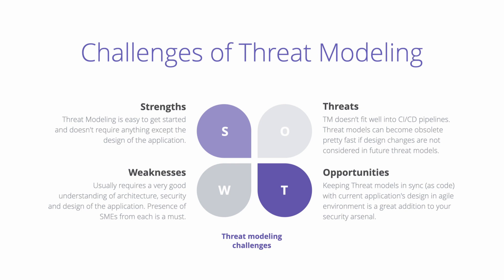Since threat modeling is a manual activity, it does not fit very well into the automated security activities in a CI/CD pipeline. It is also very challenging to keep a threat model up to date with the design changes of the application. There are some ways to write threat models as code — diagrams can be written as code — and hence writing threat models as code can help reap the benefits of auditability and versioning in agile environments.